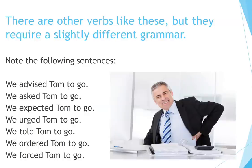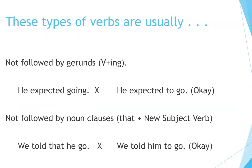There are other verbs like these, but they require slightly different grammar. Note the following sentences: 'We advised Tom to go,' 'We asked Tom to go,' 'We expected Tom to go,' 'We urged Tom to go,' 'We told Tom to go,' 'We ordered Tom to go,' 'We forced Tom to go.' These types of verbs are usually not followed by gerunds (verb-ing). For example, 'He expected going' is incorrect; 'He expected to go' is correct.